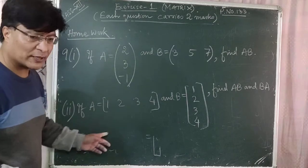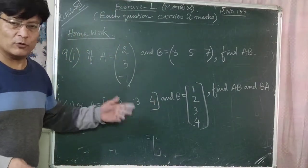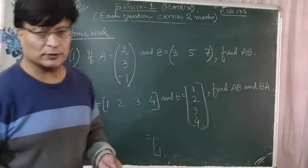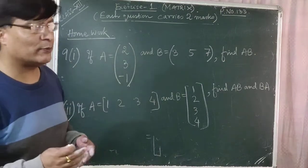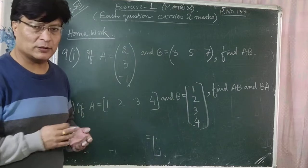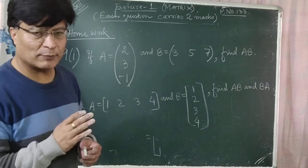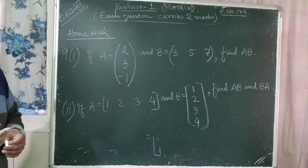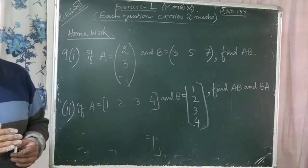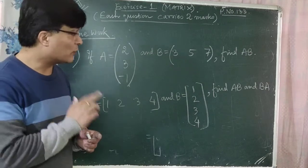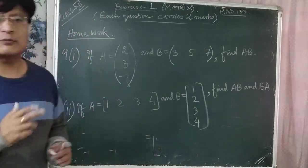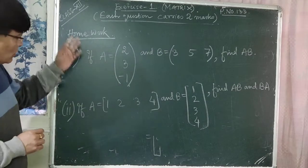For number 2: if A is the row matrix [1, 2, 3, 4] and B is the column matrix [1; 2; 3; 4], find AB and BA if possible. For AB, check number of columns of A equals number of rows of B. For BA, check number of columns of B equals number of rows of A. You can do these at home. So you can revise all the problems we have done today, and in the next class we will do more problems. Thank you.